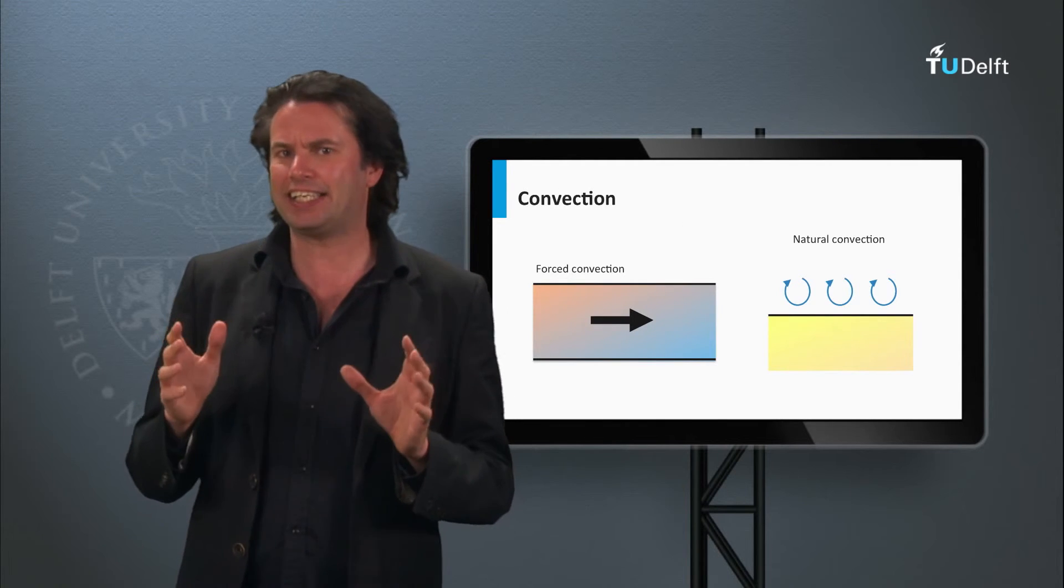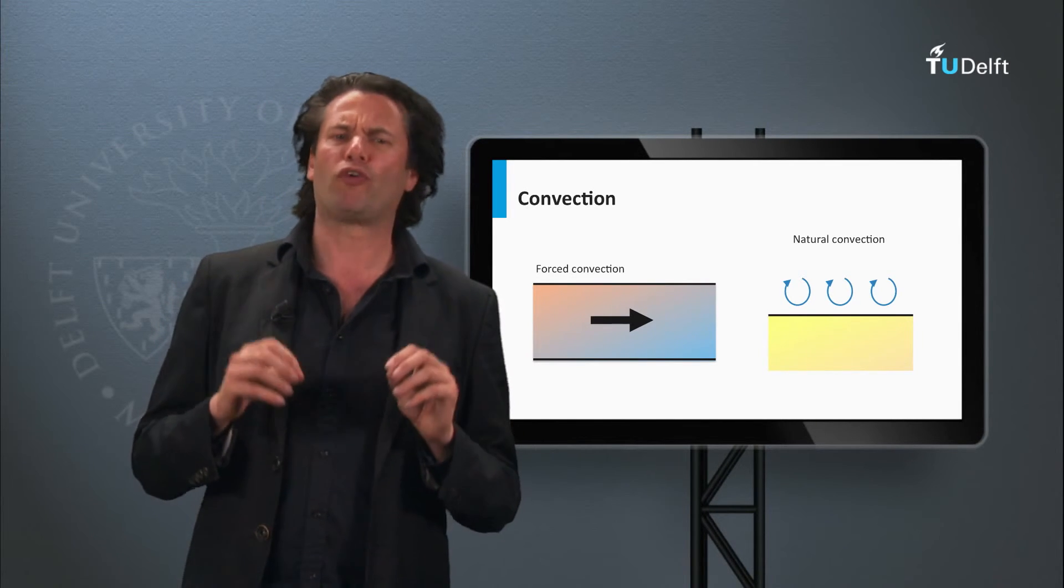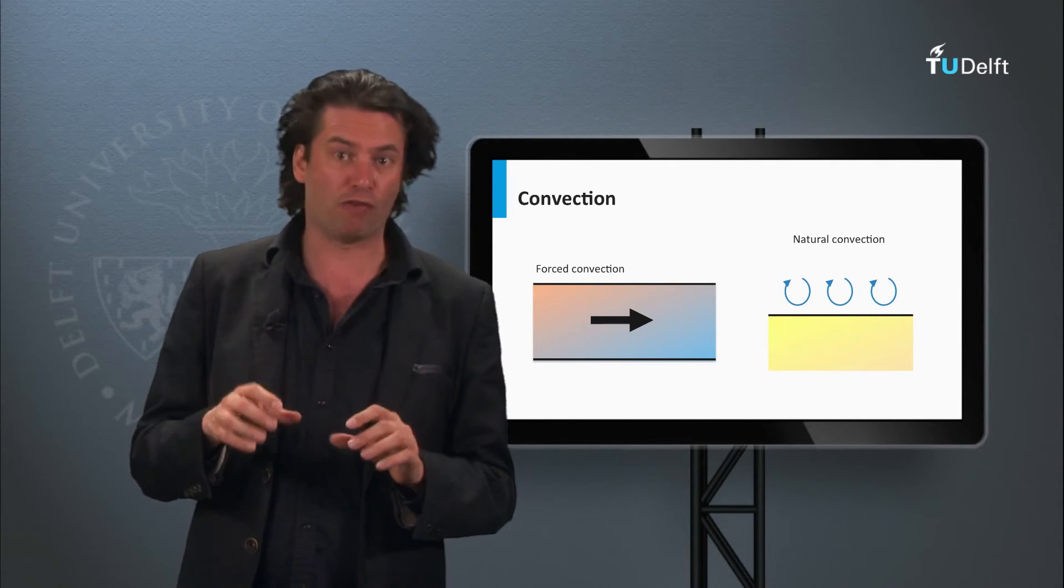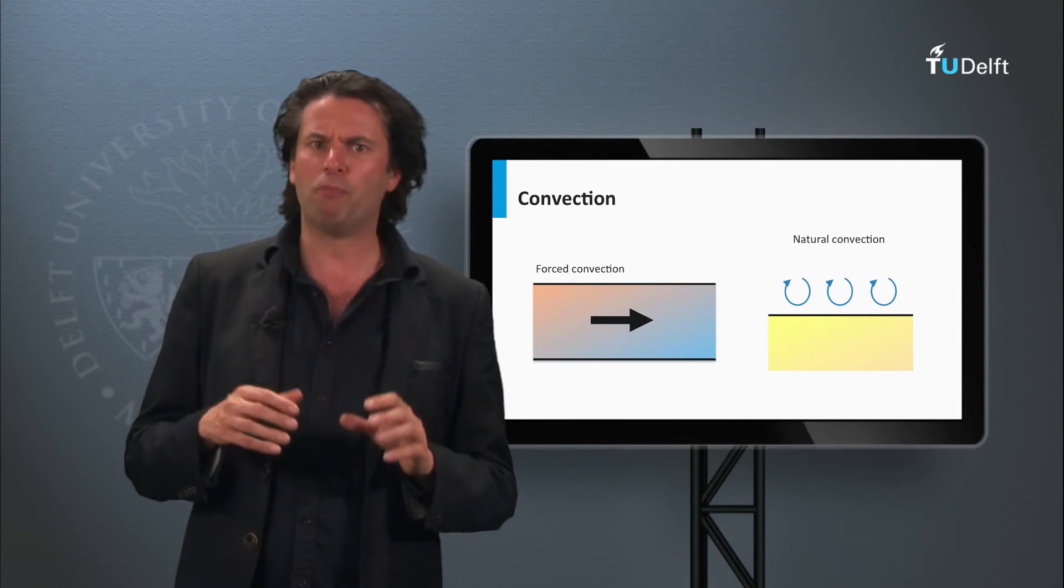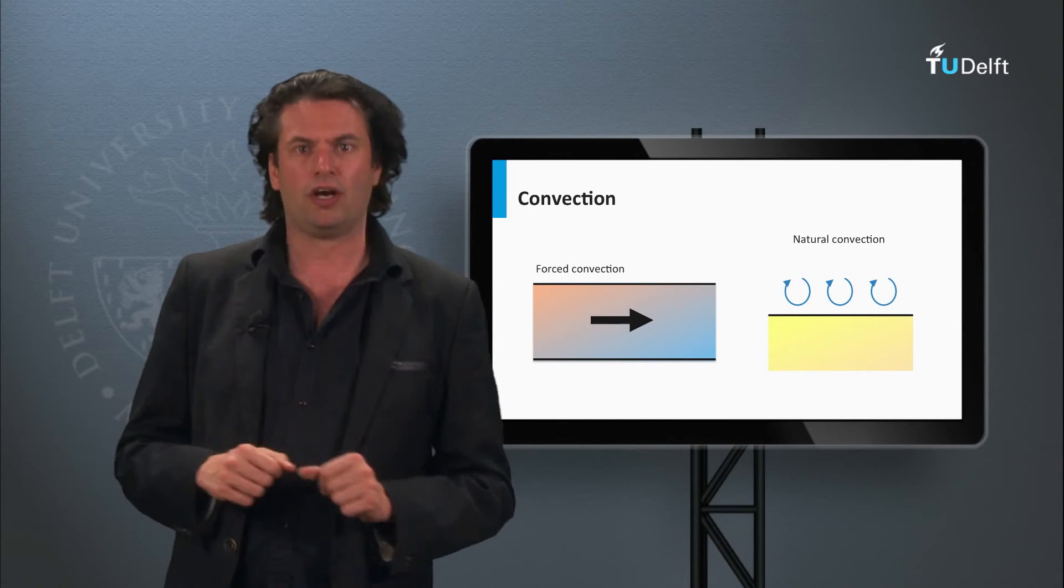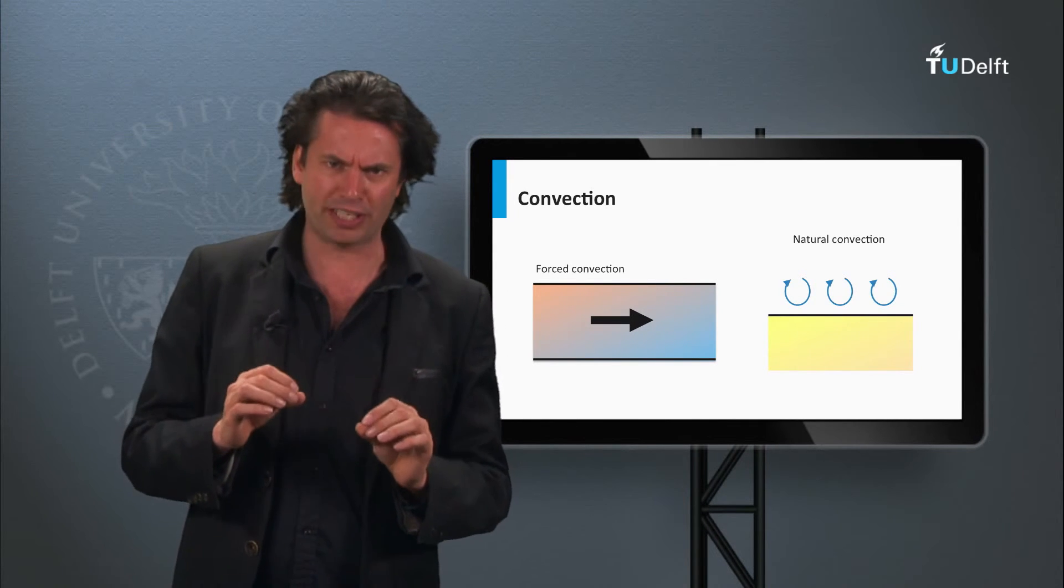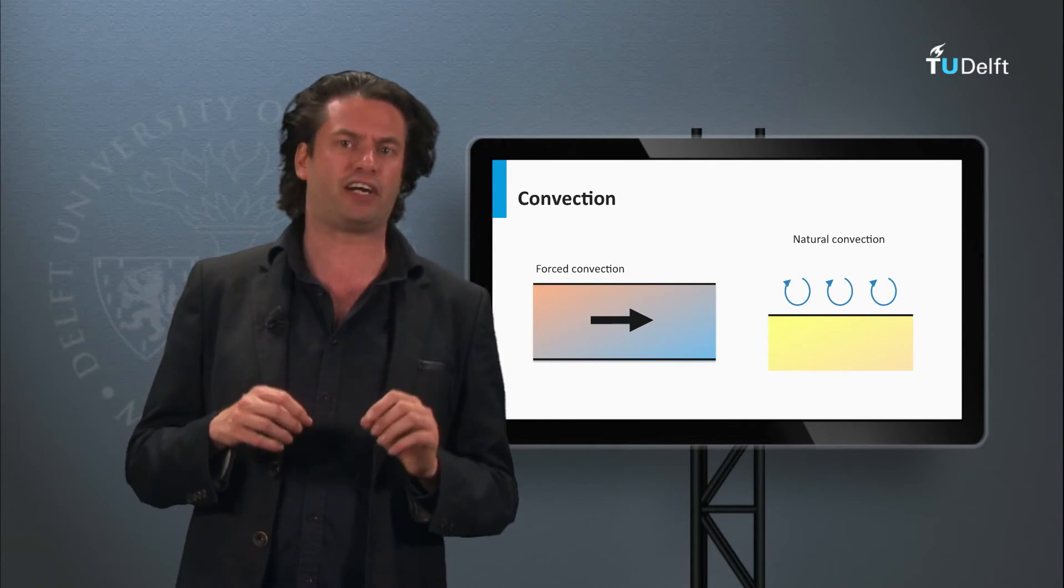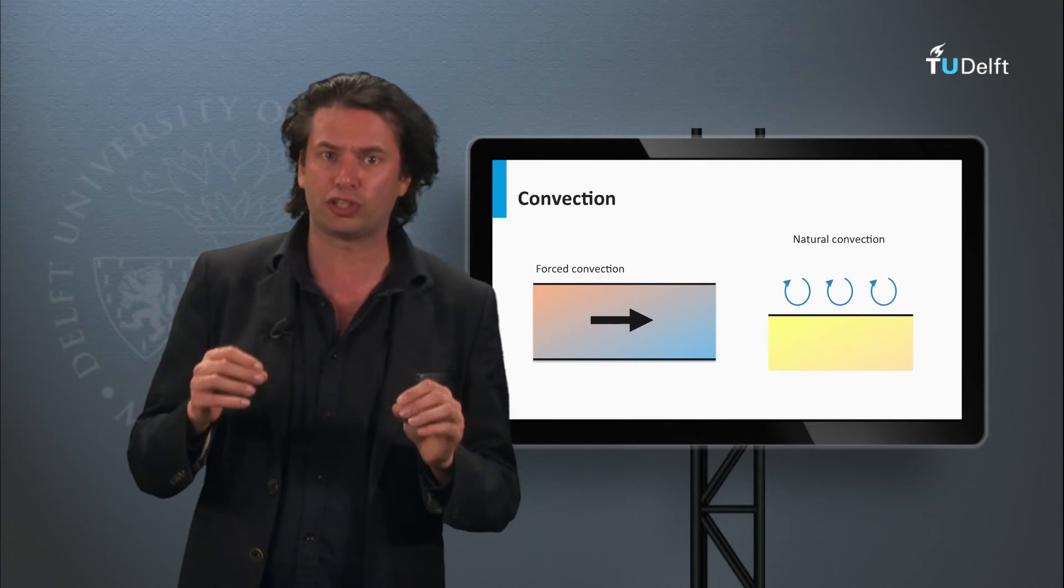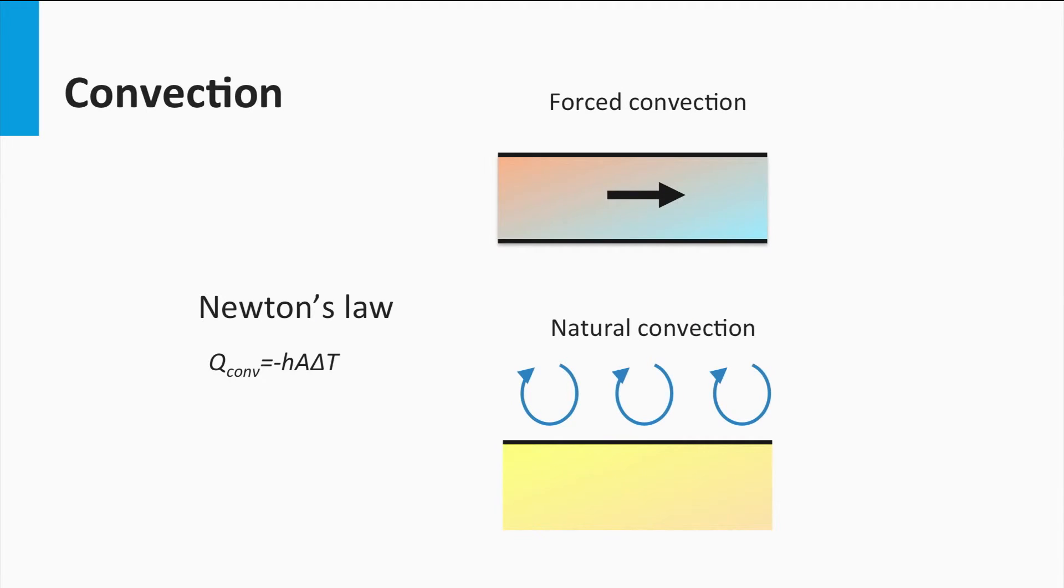Convection is the second possible mechanism for heat transfer. Convection is the transfer of heat by the movement of a fluid. When a moving fluid is hot, it will transport that heat with its mass. Convection can be forced when the movement of the fluid is caused by external variables, or natural by the density difference caused in the fluid due to the temperature gradients.